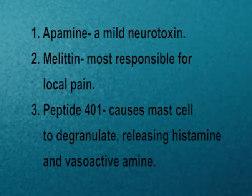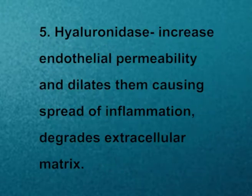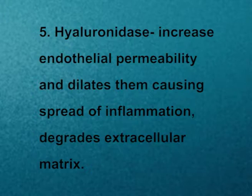A honey bee can inject 0.1 milligram of venom via its stinger. Apitoxin contains: Apamine, a mild neurotoxin; Melittin, most responsible for local pain; Peptide 401, which causes mast cells to degranulate, releasing histamine and vasoactive amines; Phospholipase A2, the most destructive component, which degrades phospholipids and causes destruction of cellular membranes; Hyaluronidase, which increases endothelial permeability and dilates vessels causing spread of inflammation and degrades extracellular matrix; Histamine, which causes allergy; and Dopamine and noradrenaline, which increase pulse rate.